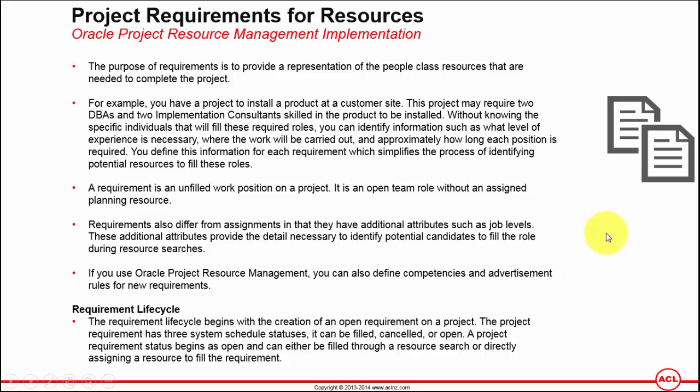You still don't know the exact name of the person who would fill the role, and that's what you can do in Oracle Project Resource Management. You can simply log in to Oracle Projects and raise a new requirement for a specific resource — say an Oracle Applications DBA — specifying that this person must be a level 5 and must have competency levels of good English, good database administration skills, good apps administration skills, and so on. In other words, a requirement is nothing but an unfilled work position on a project — an open team role without an assigned planning resource.